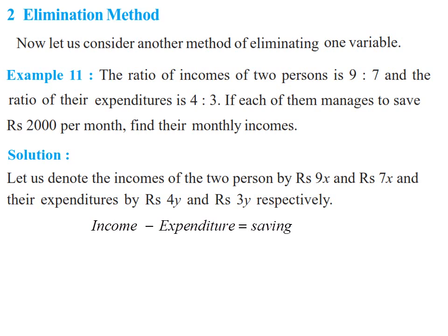For the first person, income is 9x and expenditure is 4y, so the first equation becomes 9x minus 4y equals 2000, and that is equation number 1. For the second person, income is 7x and expenditure is 3y, so 7x minus 3y equals 2000, and that is equation number 2.